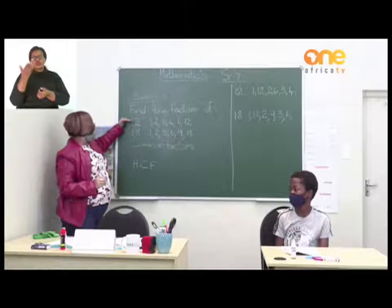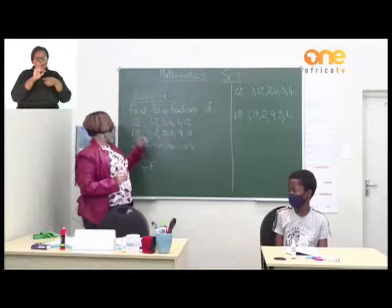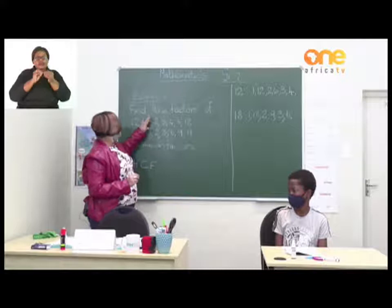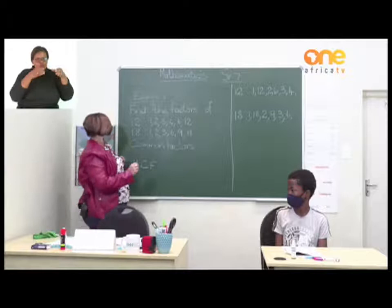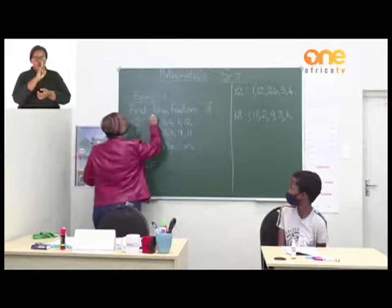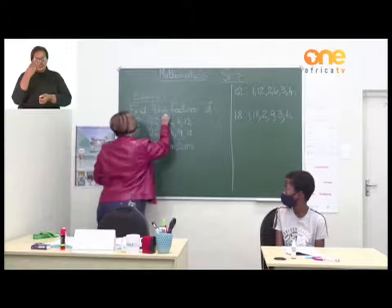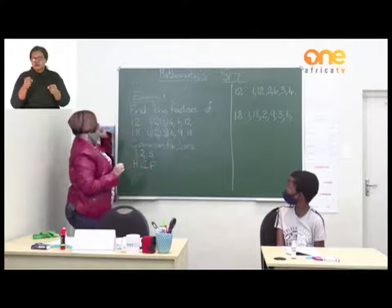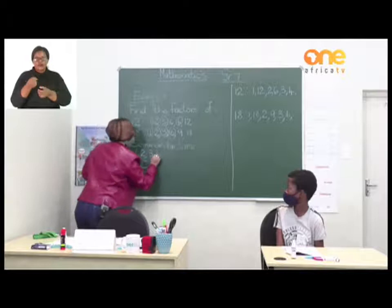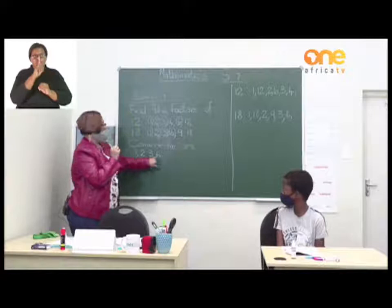On the board we have the factors of 12 and the factors of 18. Now we need to find the numbers that appear in both sets — the common factors. He says one, because we have a one in both. Two — found in both sets. Three — found in both sets. Six — found in both sets. No other numbers. So the common factors are 1, 2, 3, and 6.